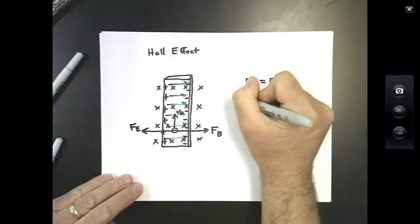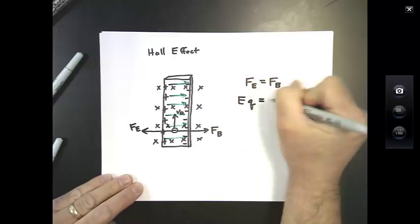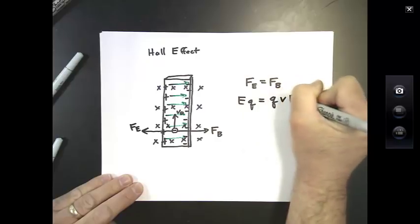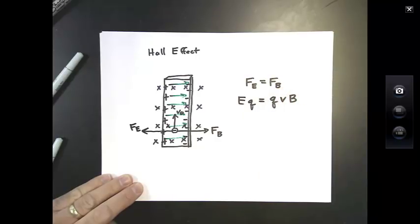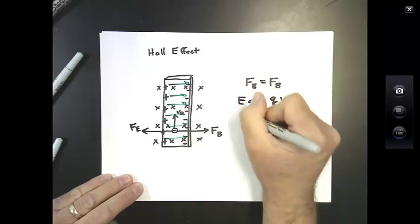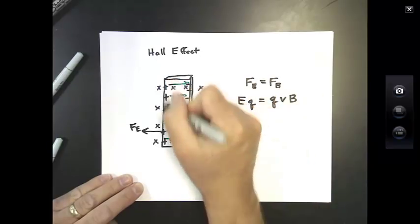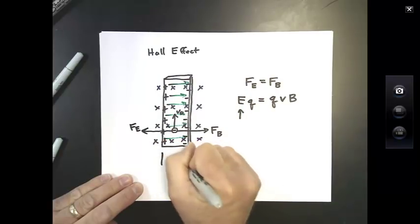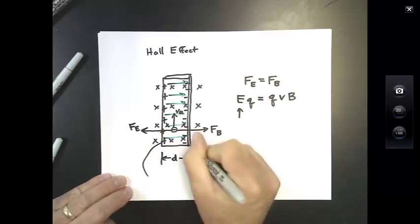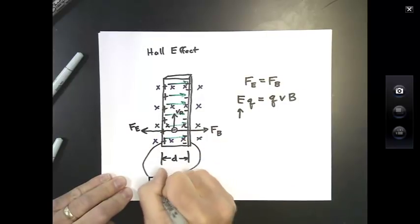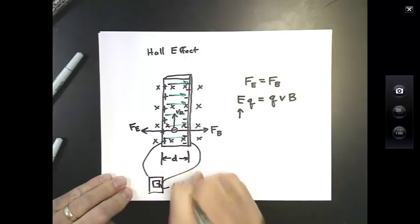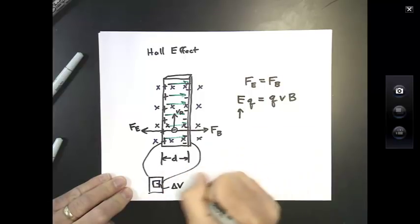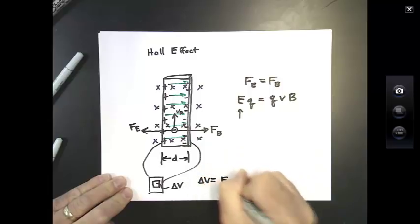Once again, just like in the last page, we're going to say E times the charge equals QVB, because the velocity and the B field are perpendicular. This is kind of like a pair of parallel plates. If we know the width of our copper strip and we take a voltmeter and run it between the two sides, we can find the delta V. We know that delta V is equal to E times D, or that E is equal to delta V over D.